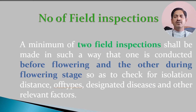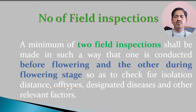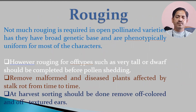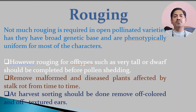The third important technique during seed production is the number of field inspections. A minimum of two field inspections are required — one before flowering and one during flowering — to avoid contamination in the seed production plot. Roguing is the removal of abnormal or off-type plants from the seed plot so that you can maintain genetic purity year after year.